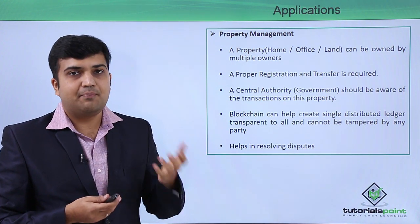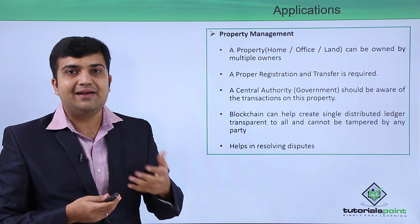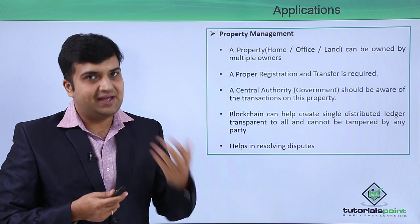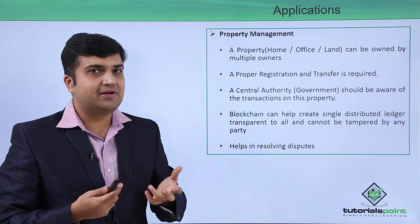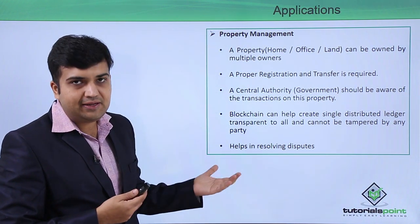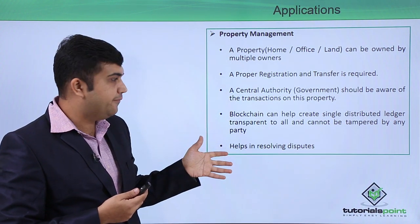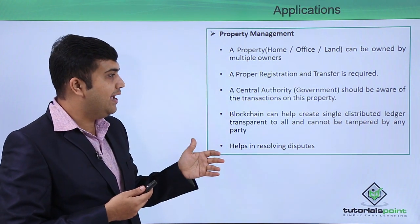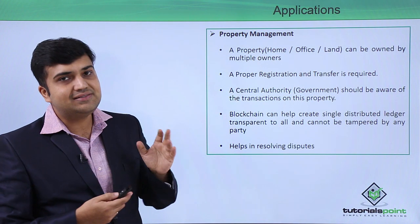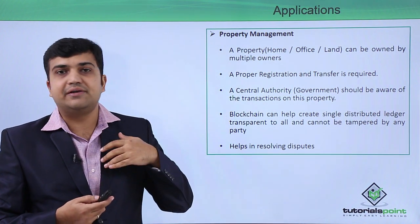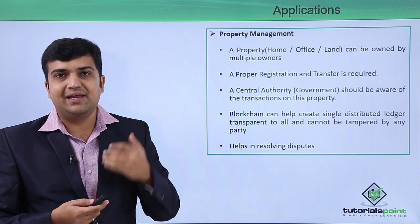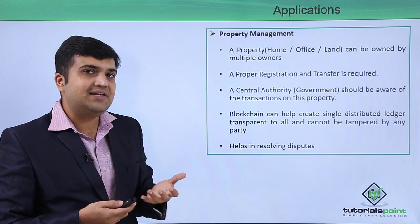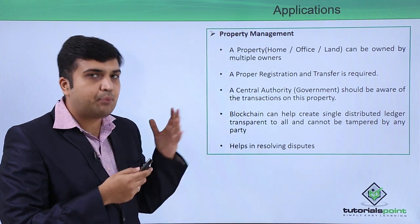If the government does not have the proper record of that transfer of ownership, there can be a dispute for the property and issues may arise. If the entire ownership history of the property is taken on the blockchain platform, it can help create a single distributed ledger transparent to all and cannot be tampered by any party. This can also help in resolving all disputes and will help the government to take care of taxes and so on. Blockchain can be applicable to the applications of property management.